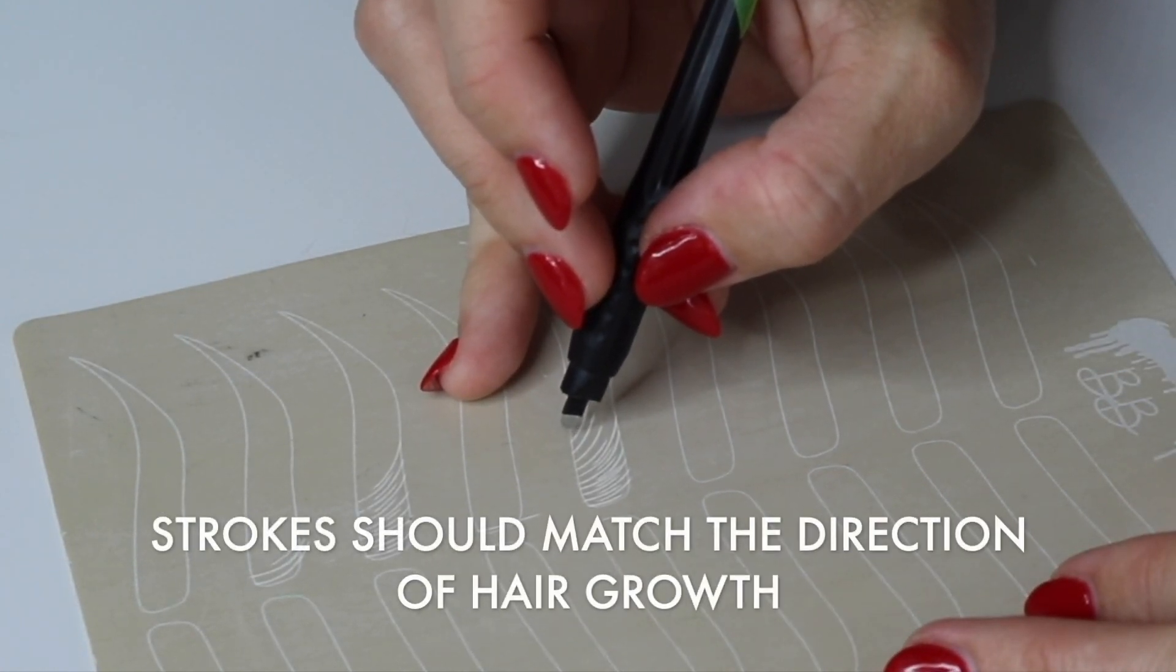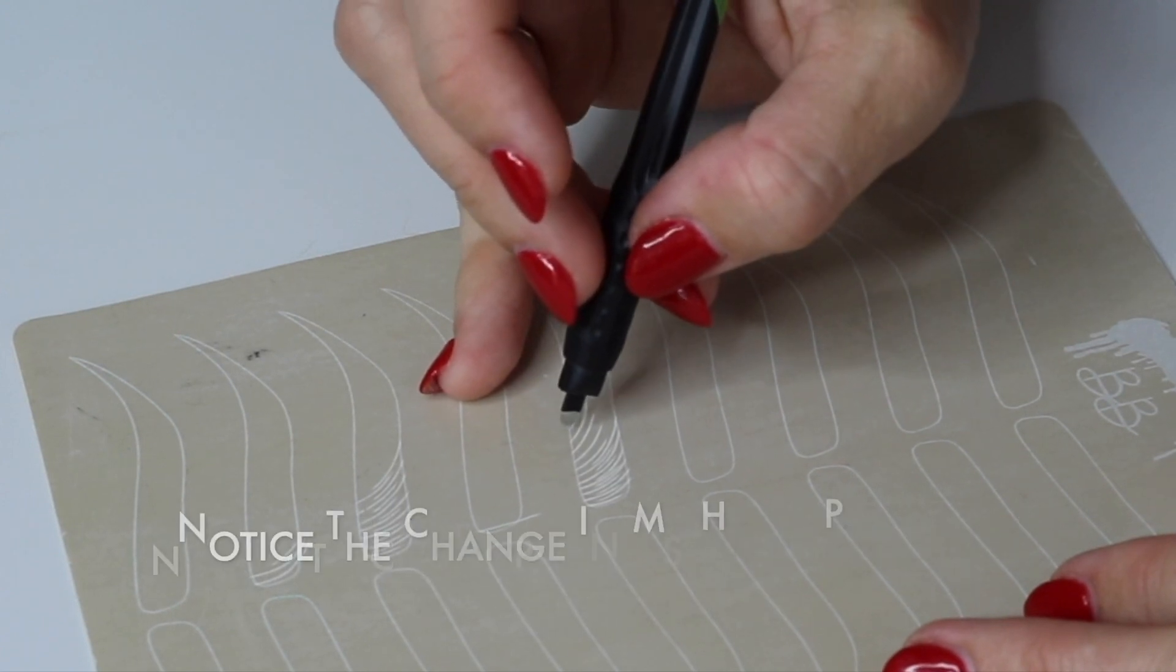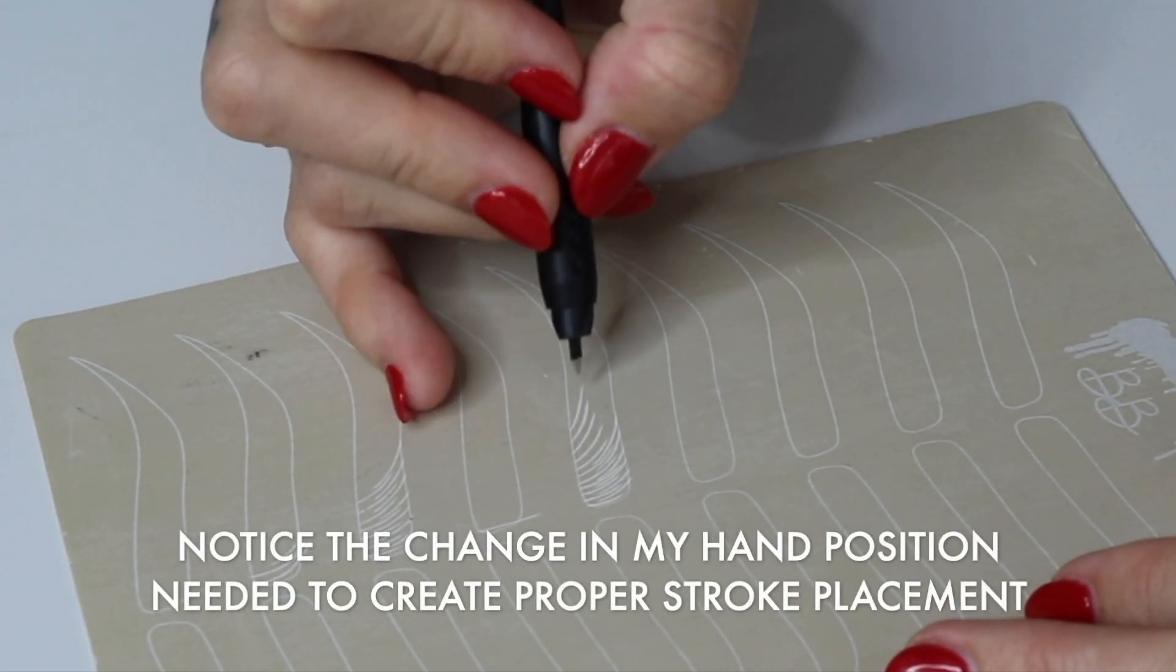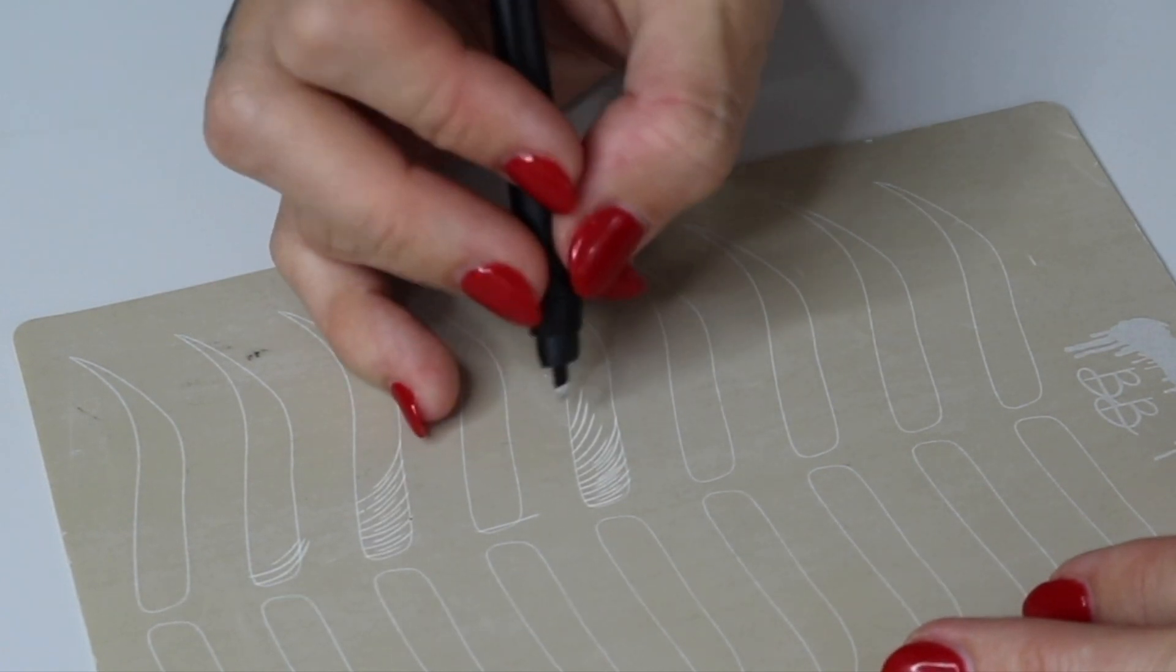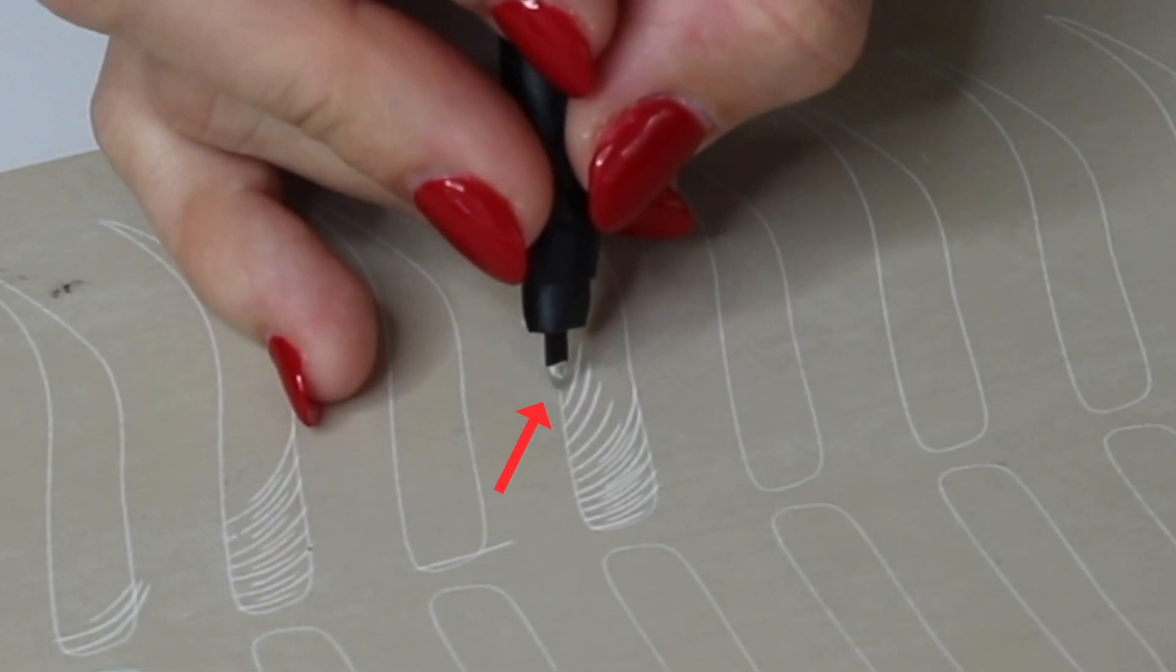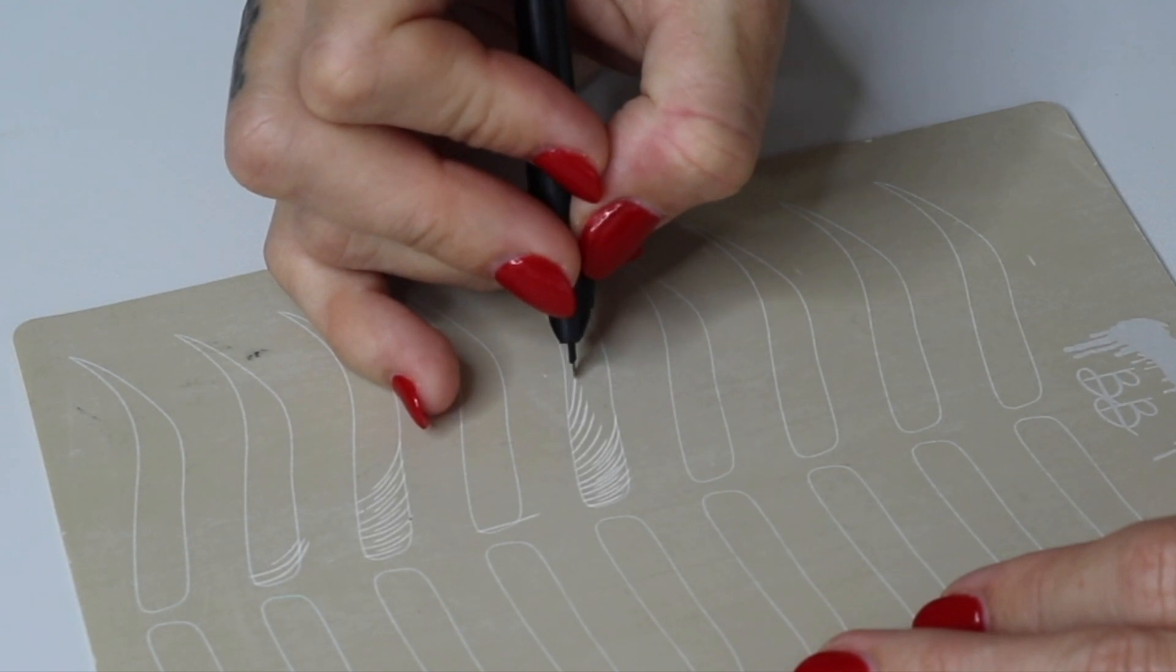Think about where you want your stroke to go. Where is it going to be pointing? So in this case my stroke is pointing this way so my blade should almost be pointing that way. Our strokes are only about a one o'clock curve.